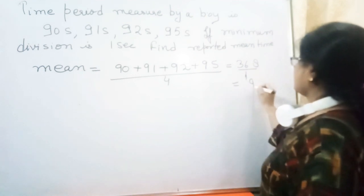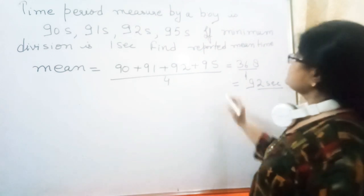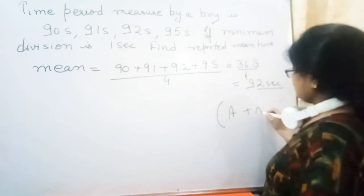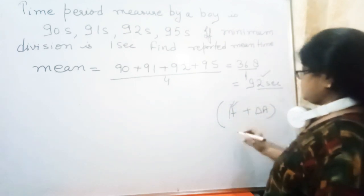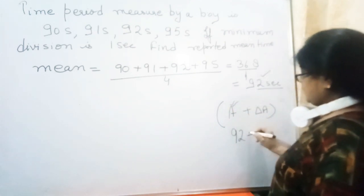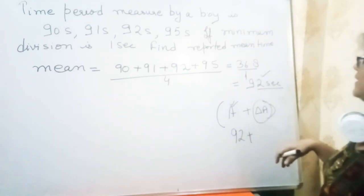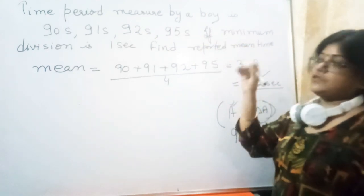When we write reported time, we write a plus-minus delta a. The value for a is 92, which is fixed. Now we find the value of delta a by subtracting 92 from each observation - this is known as absolute mean error.